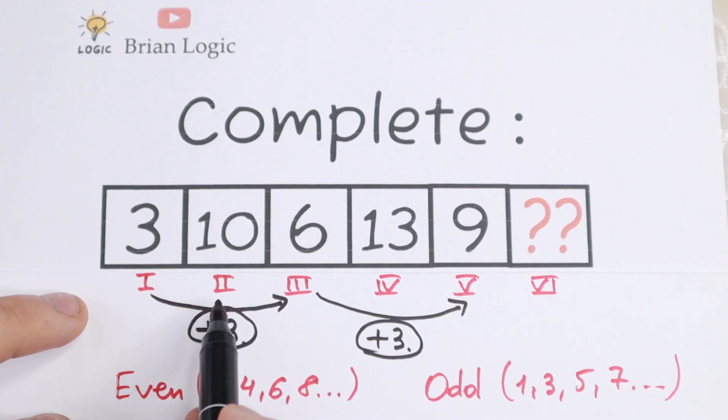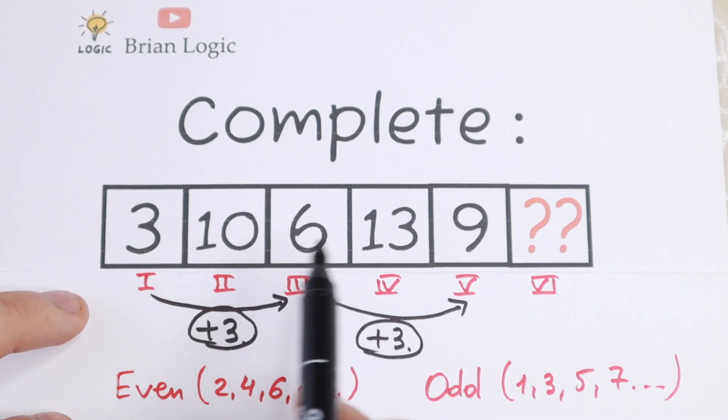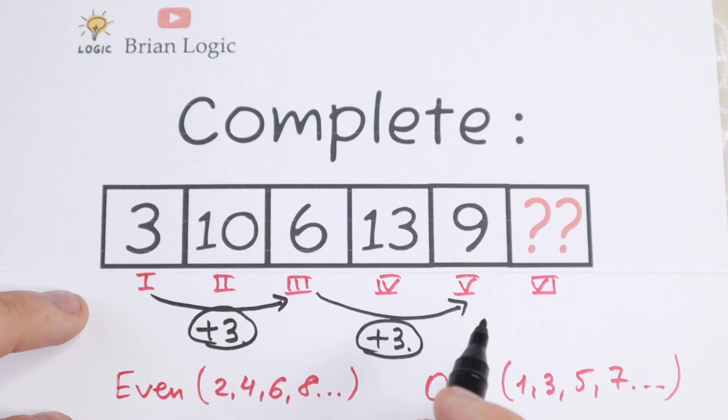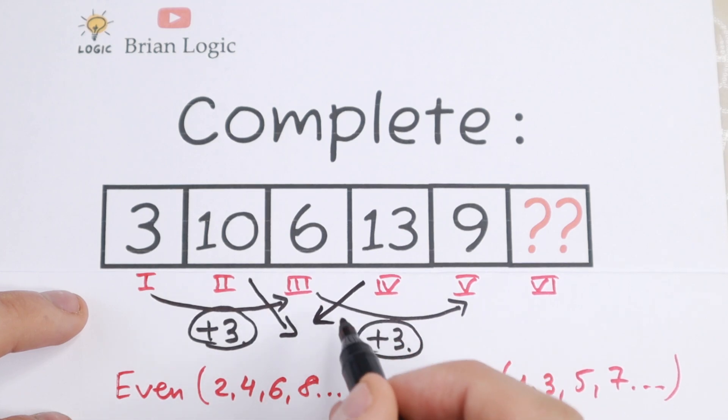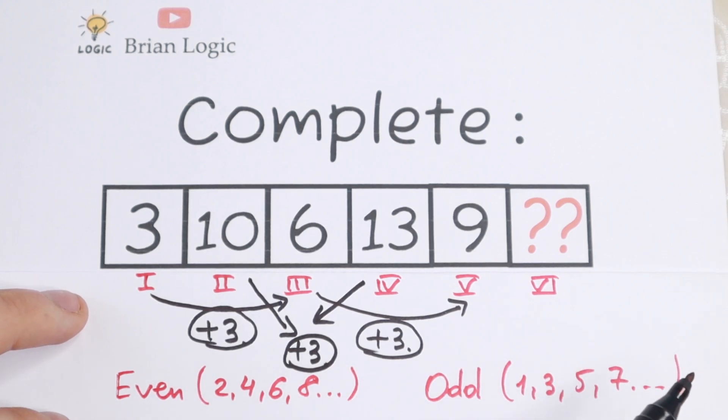But we have even positions: 2, 4, and 6. As you can see, even position 2 has value 10, and the next one, position 4, has value 13. So we need to add 3. I hope you see it. I'll write this right here. To this 13 we need to add 3. It's not hard to think that this logic works, because we add 3 to odd positions and we add 3 to even positions.